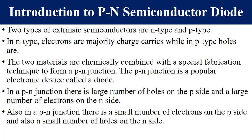A diode is a very popular electronic device. In a PN junction, a large number of holes are on the P side while a large number of electrons are on the N side. We also know that we have minority charge carriers — can you determine what kind of minority charge carriers you find on the P side as well as on the N side?